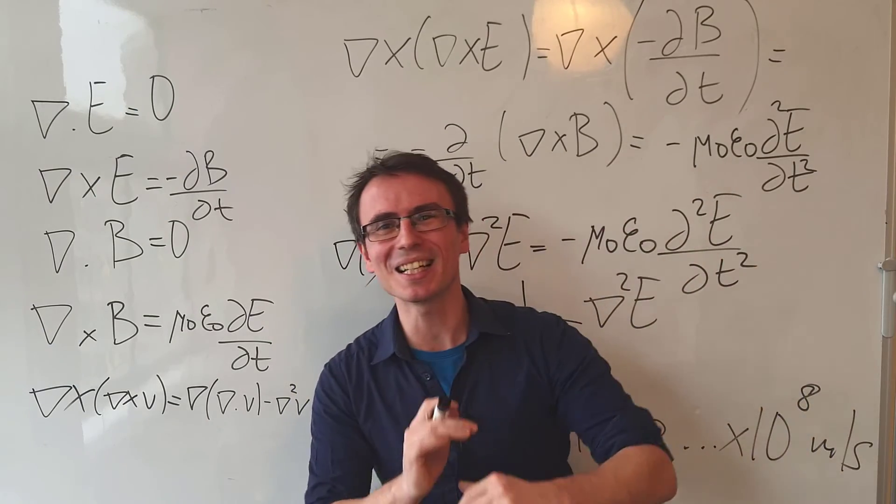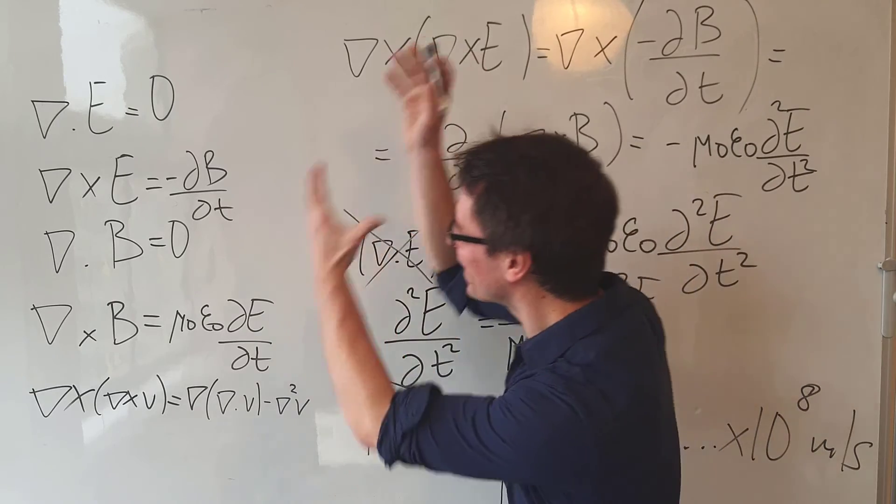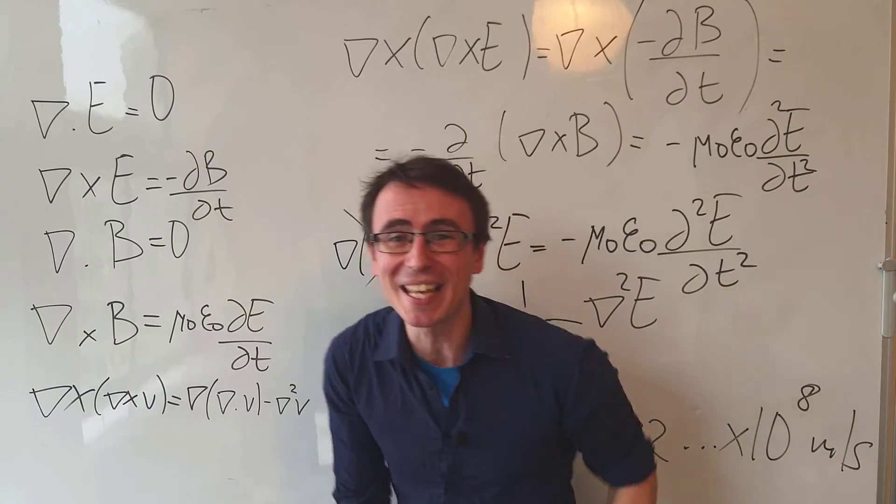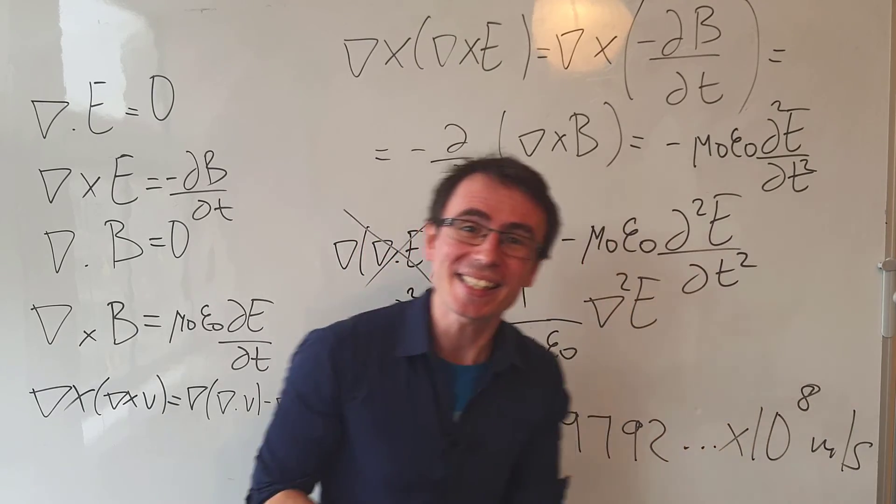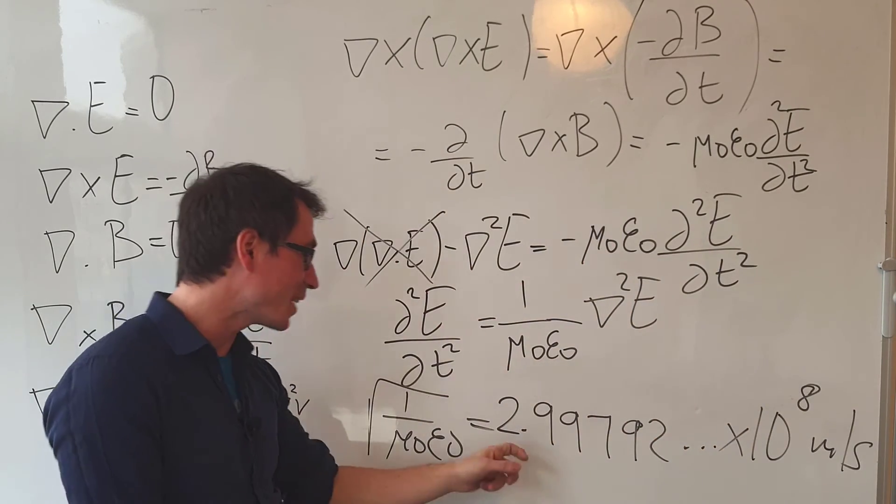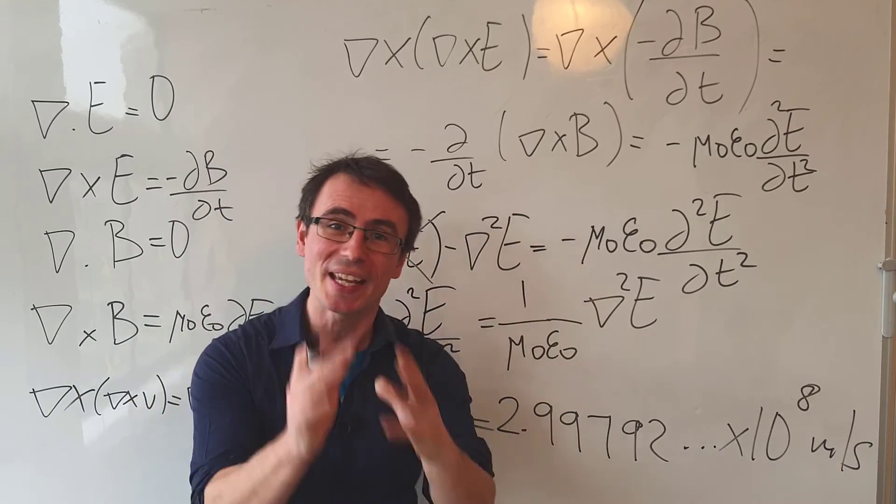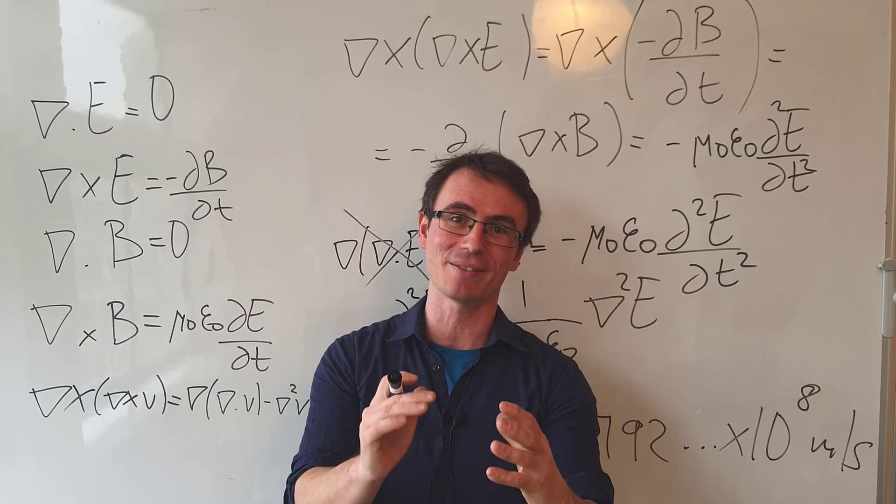Well, a young patent clerk by the name of Albert Einstein really believed that those equations are correct. And he redesigned the whole of physics in consistency with the fact that the speed of light remains constant. And this was the birth of relativity.